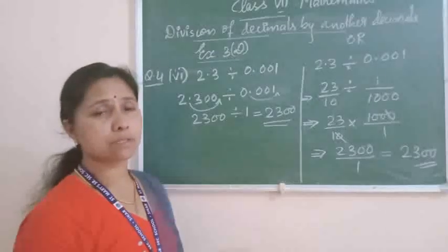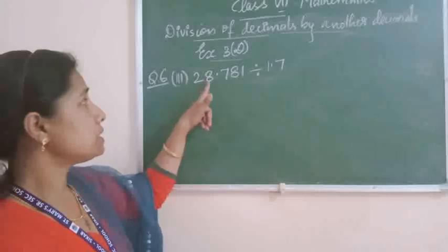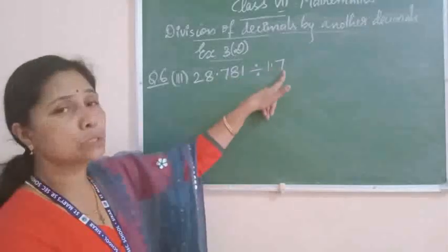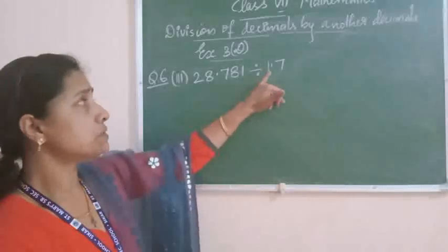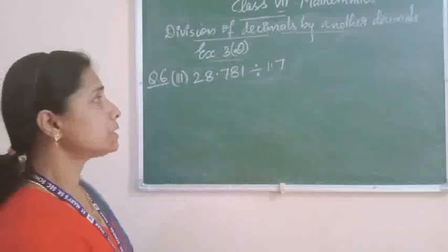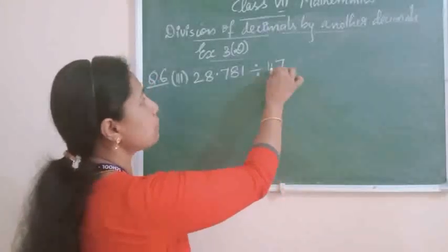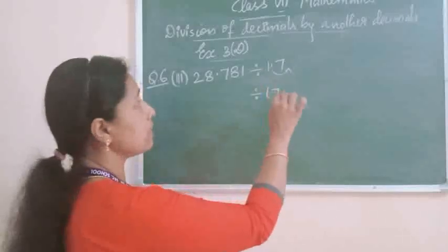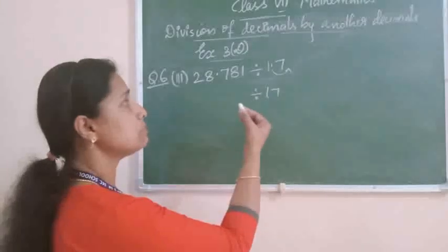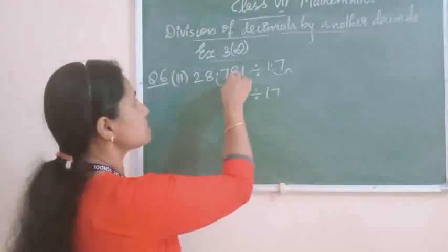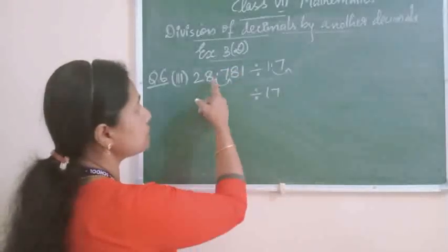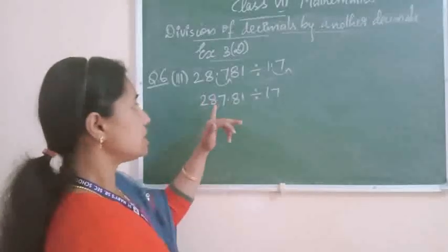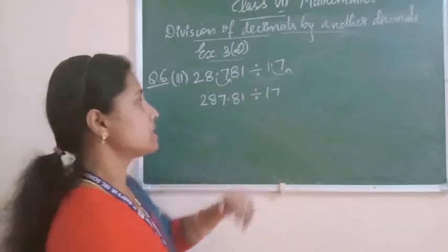Now let us move to the next question. Question number 6, third part: 28.781 divided by 1.7. Here also, the dividend is a decimal number and the divisor is also a decimal number. You already know — first, you have to change this divisor into a natural number. In the divisor, only one digit is given after the point, so you can shift this point to the right side by 1 place. So 1.7 becomes 17. Same way, from the dividend also, you shift the point to the right by 1 place, so 28.781 becomes 287.81. Now we changed both dividend and divisor. Now you have to do the division.